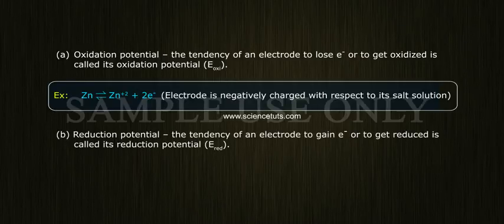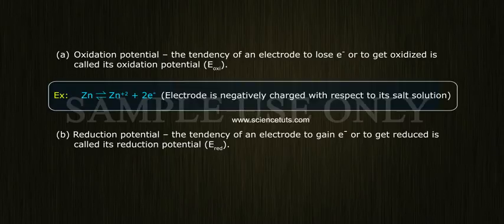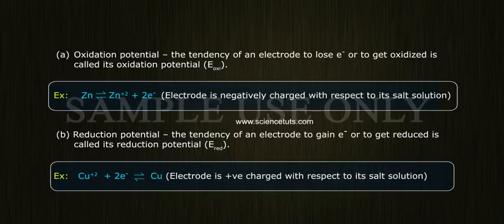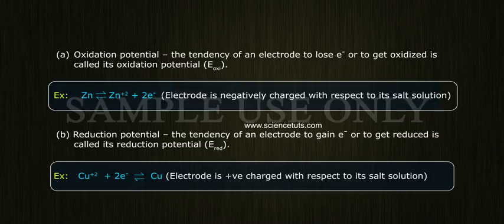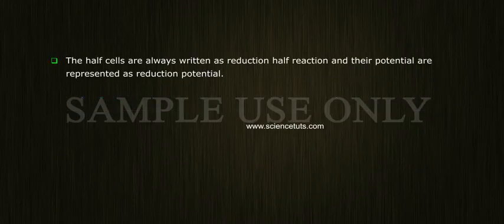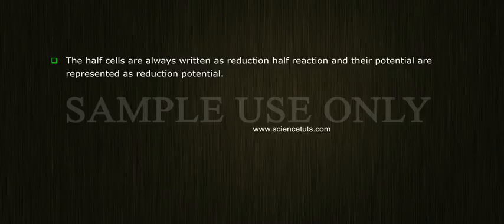B. Reduction Potential: The tendency of an electrode to gain electrons or to get reduced is called its reduction potential. Example: Cu²⁺ + 2e⁻ → Cu. The electrode is positively charged with respect to its salt solution. Half cells are always written as reduction half reactions, and their potentials are represented as reduction potential.